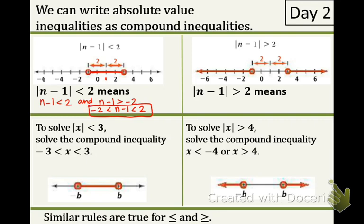Now let's look below. To solve, this is just a random example to show you how it works. To solve absolute value of x is less than 3, solve the compound inequality negative 3 is less than x which is less than 3. So what this is saying is x is within 3 units from 0, so that means it would have to be between negative 3 and positive 3.